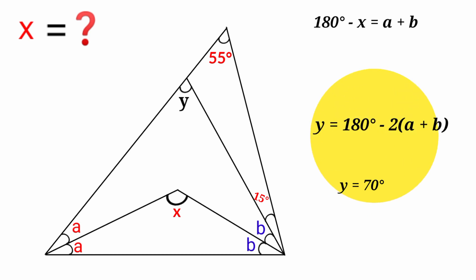If you substitute into this equation here, 70 degrees equals 180 degrees minus 2 times (a plus b). But we have from this equation here, 180 degrees minus x equals a plus b. So we can replace this a plus b with 180 degrees minus x.